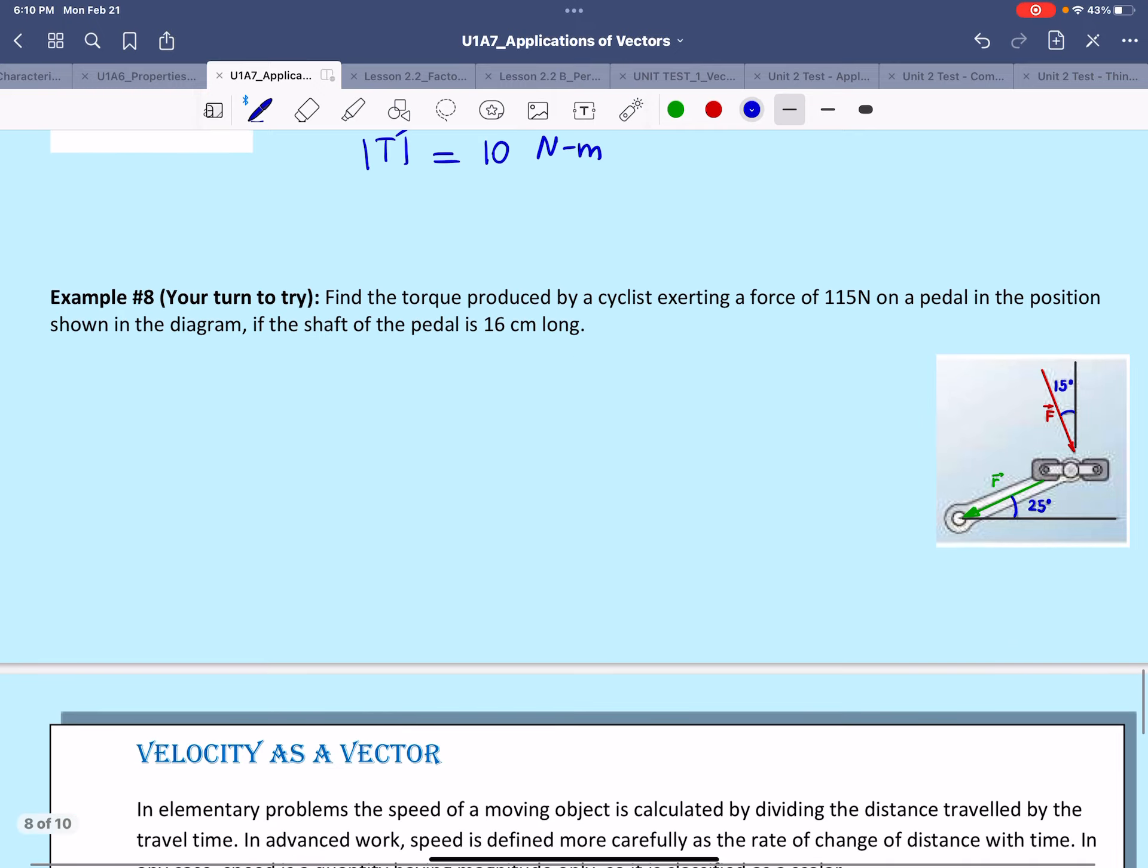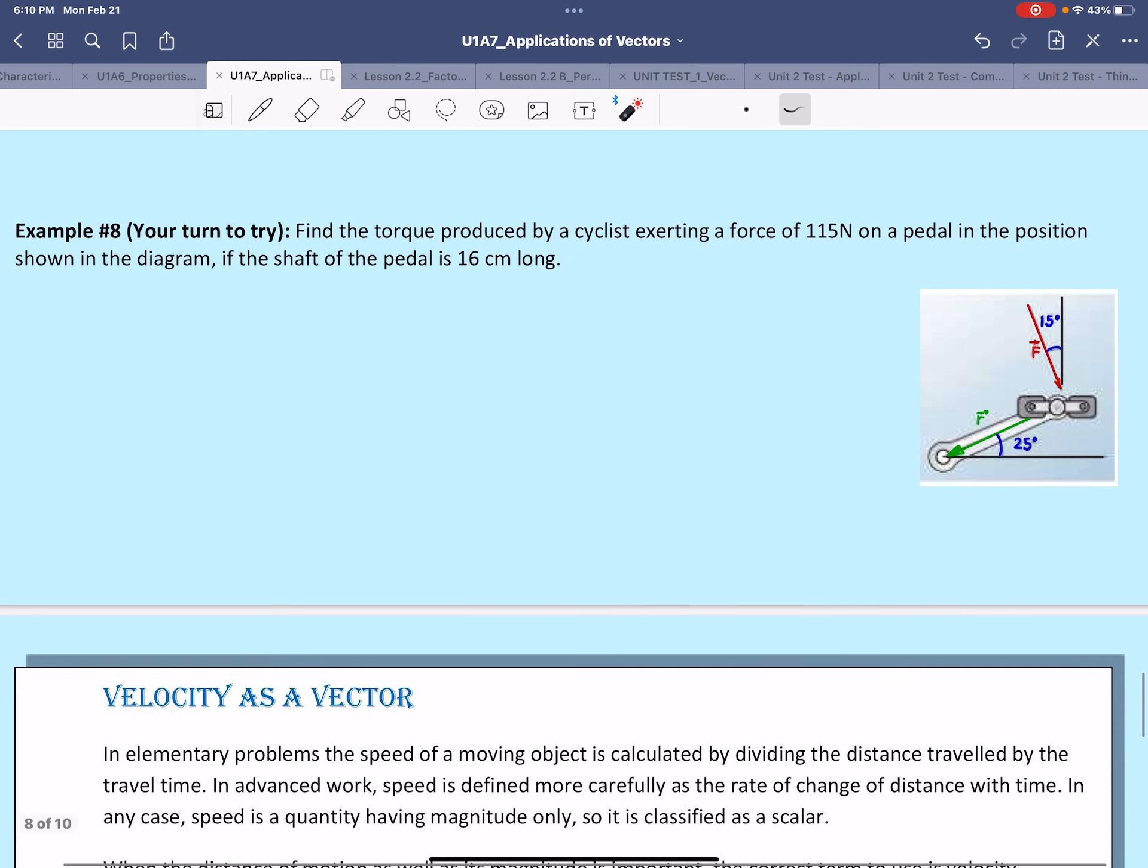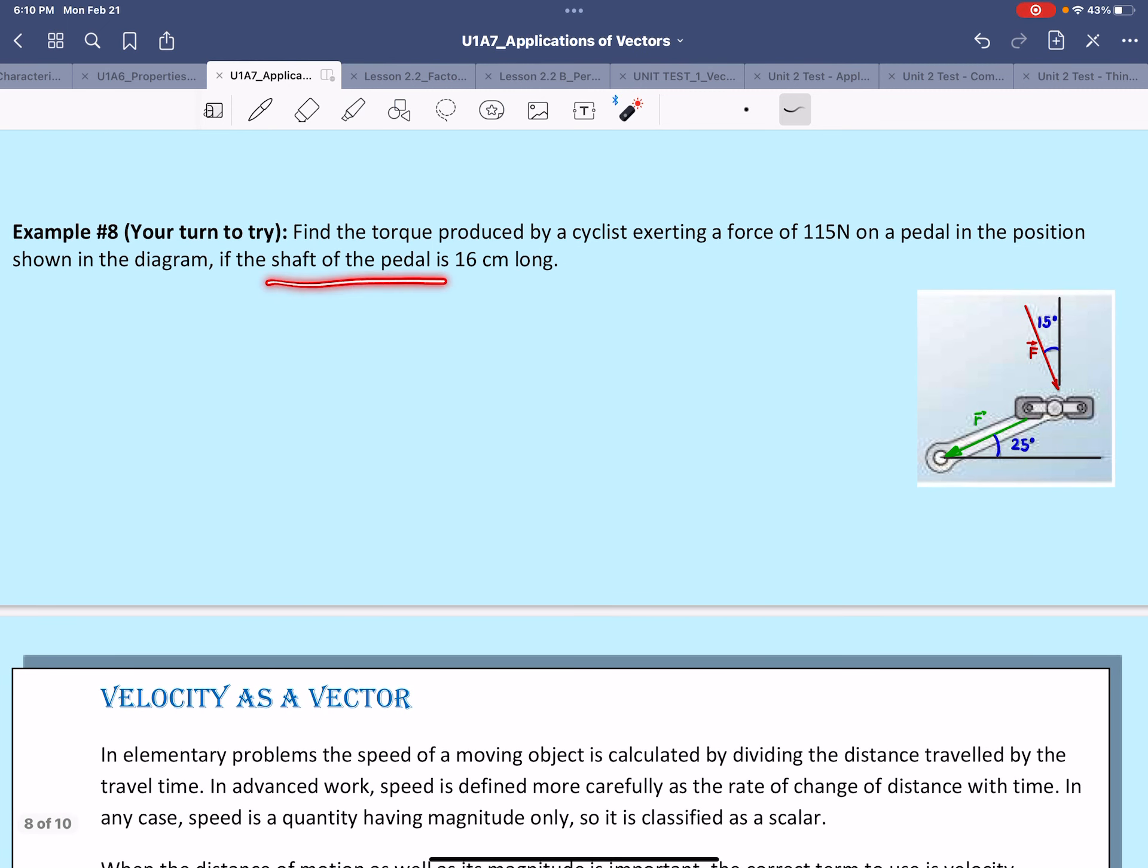Here we have another example. I suggest you try this on your own. We have to find the torque produced by a cyclist exerting a force of 115 newtons on a pedal in the position shown in the diagram. Now the shaft of the pedal is 16 centimeters long. This is probably going to give us the value of R because we're applying the force right on the shaft of the pedal.